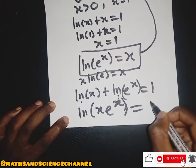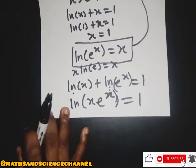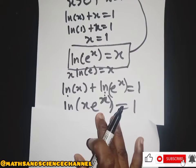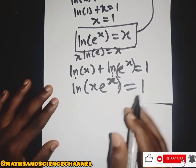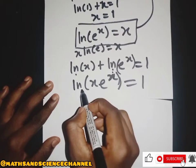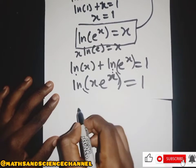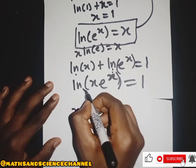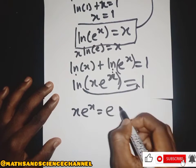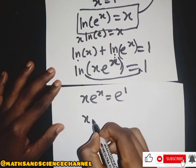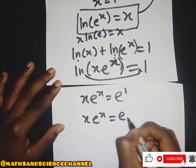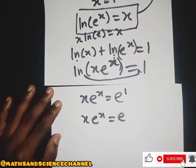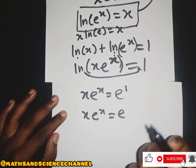Combining gives us ln(x · e^s) = 1. From here we can further simplify: this becomes x · e^s = e^1, so we have x times e^s equals e.